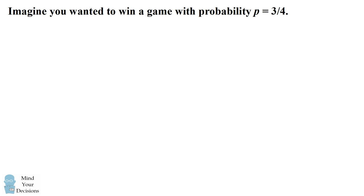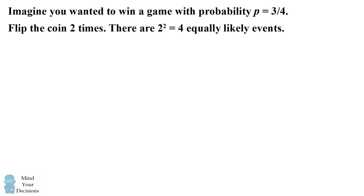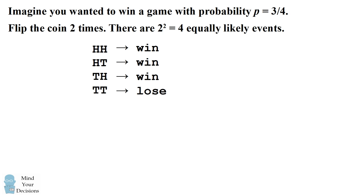Let's get started with some examples. Imagine you wanted to win a game with probability 3 fourths. One way to do this is you could imagine flipping the coin two times. This generates four equally likely sequences of coin tosses. We can classify three of those sequences as a win for you and one of those sequences as a loss for you. This will be a game in which you win three fourths of the time.